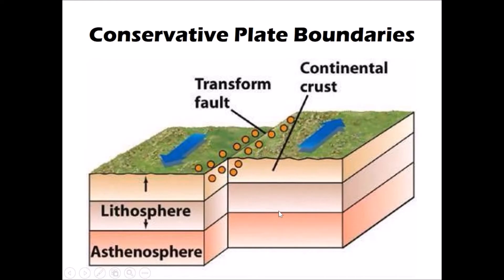Because they are huge slabs of the earth's lithosphere, they don't slide past one another smoothly. Along the boundary between them, a huge amount of friction and pressure builds up. The plates get locked together, that friction builds up until eventually they jolt suddenly — a sudden, jerky movement. That movement releases energy which we feel on the surface as earthquakes.